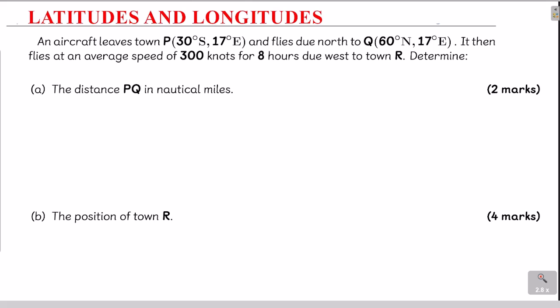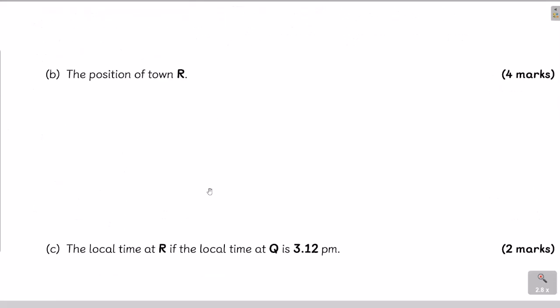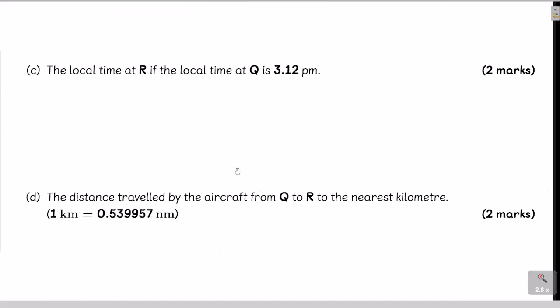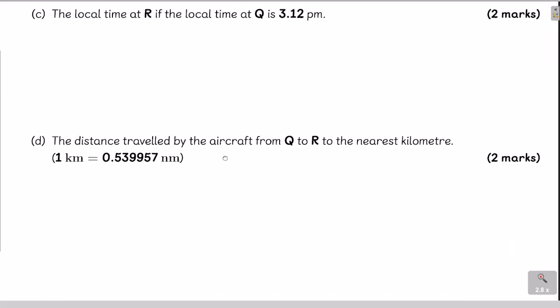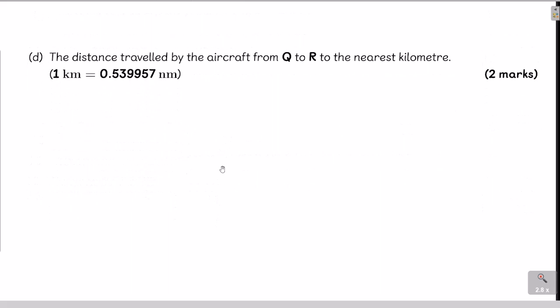Determine: A, the distance PQ in nautical miles (2 marks); B, the position of town R (4 marks); C, the local time at R given the local time at Q is 3:12 PM (2 marks); and D, the distance traveled by the aircraft from Q to R to the nearest kilometer, given that 1 kilometer equals 0.539957 nautical miles.